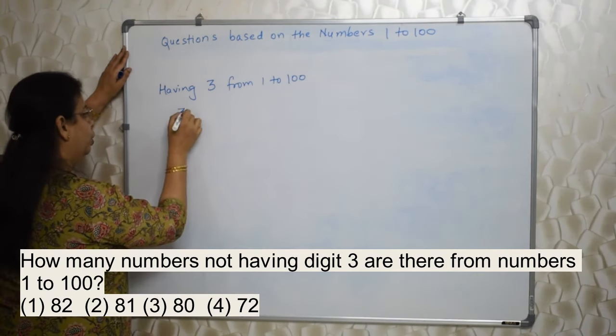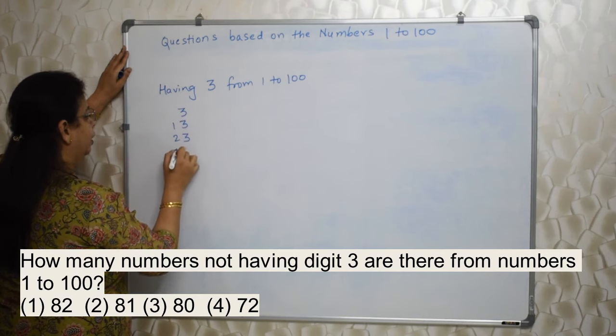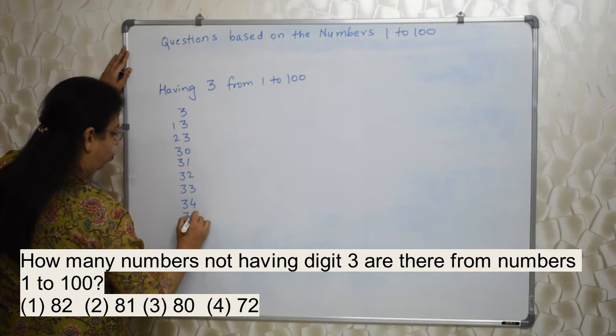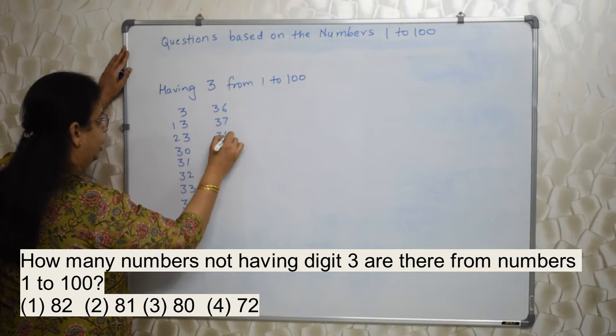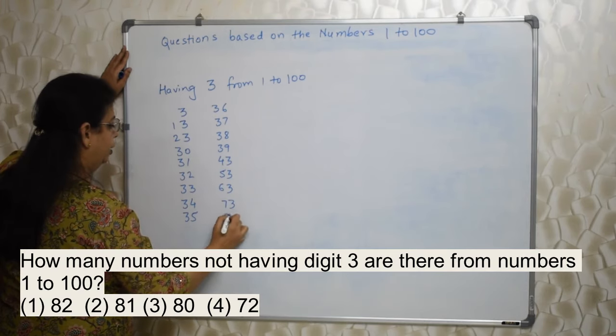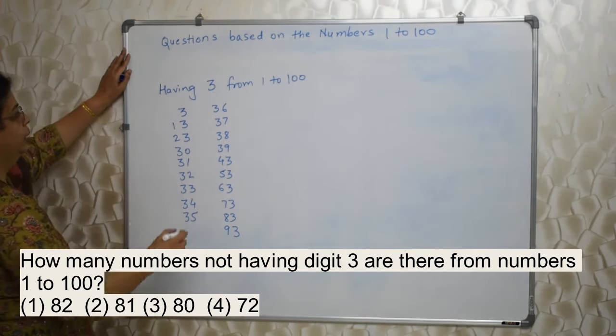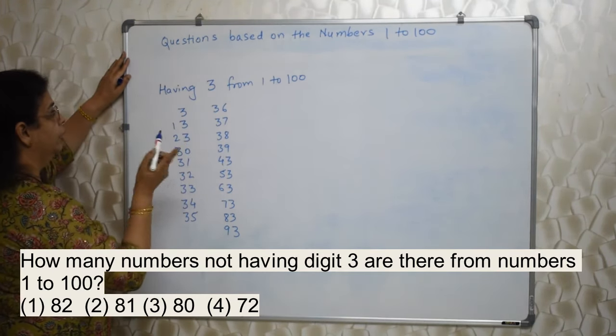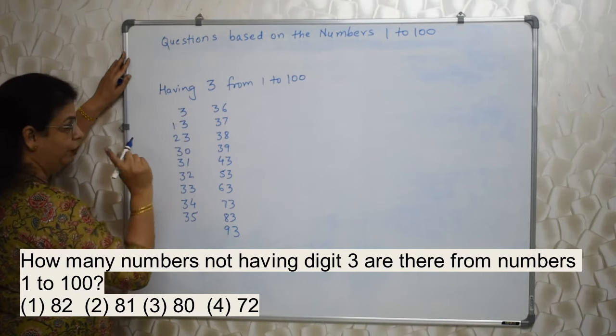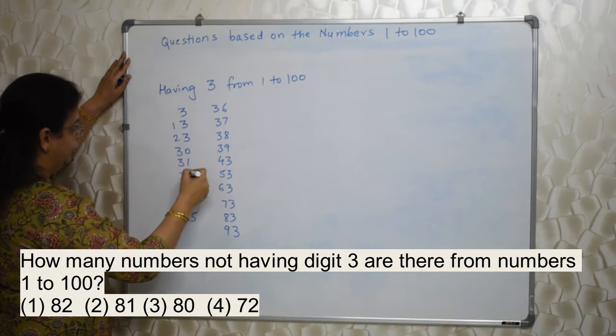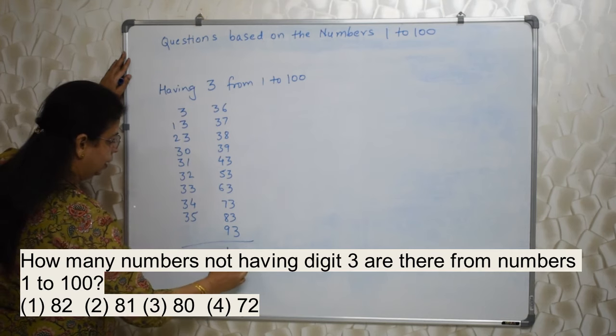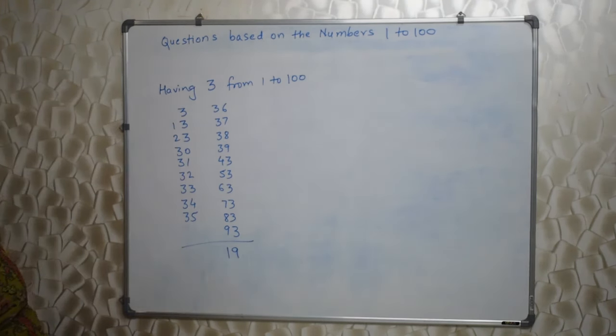Having 3 from 1 to 100: 3, 13, 23, then 30, 31, 32, 33—this 3 family you should not forget—34, 35, 36, 37, 38, 39, then 43, 53, 63, 73, 83, and 93. Now count how many numbers. Here they are not talking about digits, they are talking about how many numbers have digit 3. So numbers we need to calculate. So 33 will be one number. Counting: 1, 2, 3, 4, 5, 6, 7, 8, 9, 10, 11, 12, 13, 14, 15, 16, 17, 18, 19. So answer is 19 numbers from 1 to 100 which will have 3 in them.